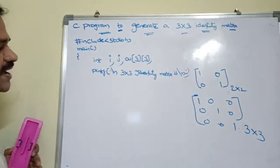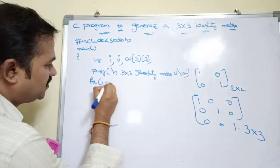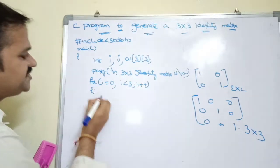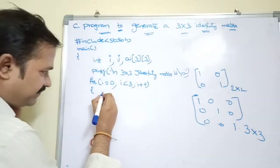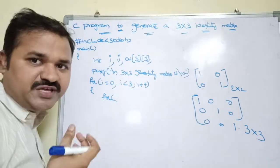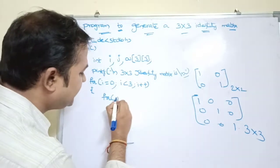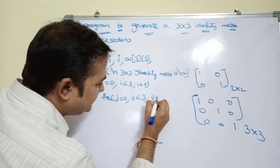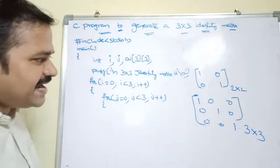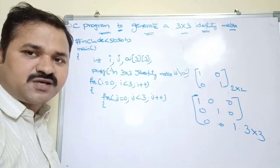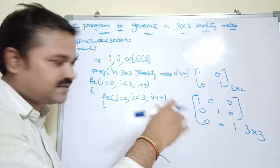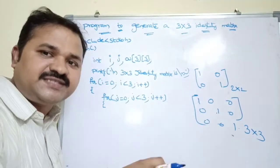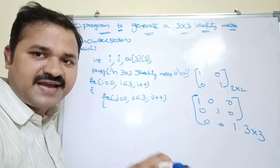Next, for i = 0; i < 3; i++ — we use i to perform operations on the rows. Then inside, for j = 0; j < 3; j++ — we use j to perform operations on the columns. The diagonal condition: if the row index and column index are the same, it is a diagonal element. So if i == j, we can say it is a diagonal element; otherwise it is not.